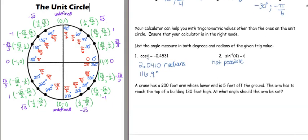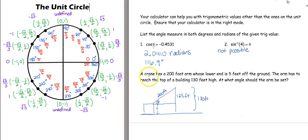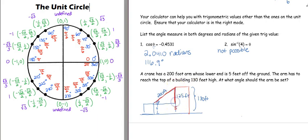Here is our last question — a real-world application. A crane has a 200-foot arm whose lower end is 5 feet off the ground. The arm has to reach the top of a building which is 130 feet high. Press pause and draw your picture first. The crane arm is 200 feet; from the ground to the lower end of the arm is 5 feet. The building is 130 feet above the ground, but since the arm starts 5 feet up, the arm only needs to cover 125 feet vertically.